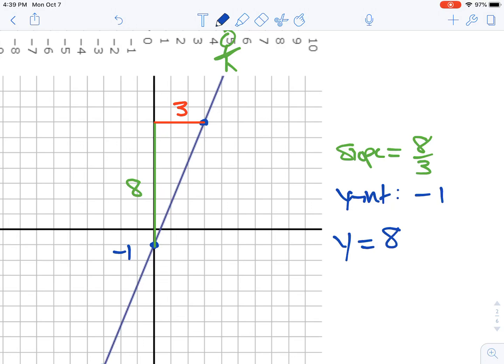So our equation is y = (8/3)x - 1. And that's how we find the equation of a line on a graph when there's no points already labeled. We just find the points and use those to find the y-intercept and the slope.